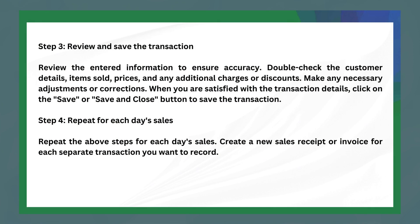The following step is to review and save the transaction. Review the entered information to ensure accuracy — double check the customer details, items sold, prices, and any additional charges or discounts. Make any necessary adjustments or corrections, and when you are satisfied with the transaction details, click on the save or save and close button.